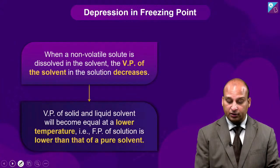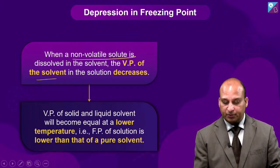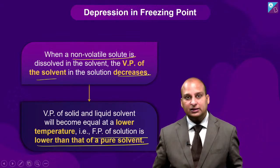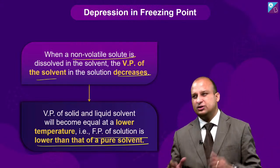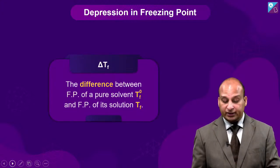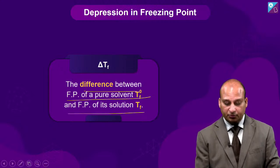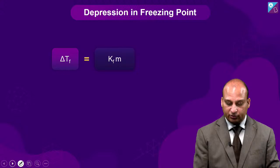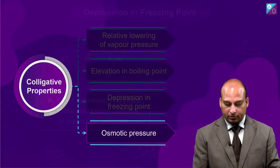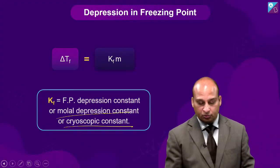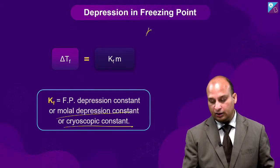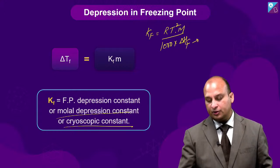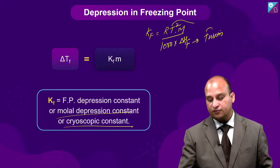Depression in freezing point: when a non-volatile solute is added, vapour pressure decreases, so the freezing point of the solution is less than the freezing point of the pure solvent. ΔT_f = T_f(solvent) − T_f(solution) = K_f × m, where K_f is the molal freezing point depression constant or cryoscopic constant. The formula is: K_f = (R × T_f² × M_solvent)/(1000 × ΔH_fusion), where T_f is the freezing point of the pure solvent.